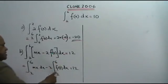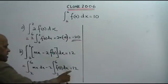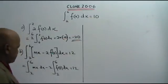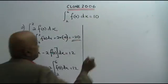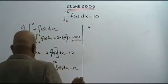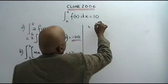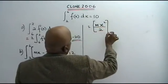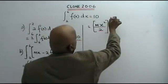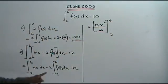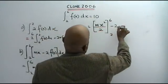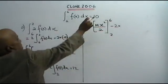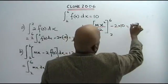Between 6 and 2, mx dx, minus 2 times the integral between 6 and 2 of f(x) dx. This minus this equals 12. Now we integrate mx to get mx squared over 2, between 6 and 2. Minus 2 times this value, which is 10, equals 12.